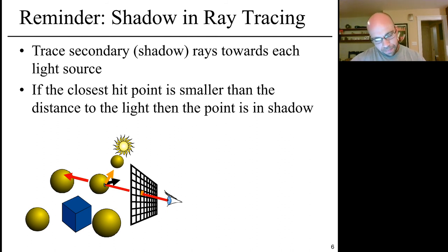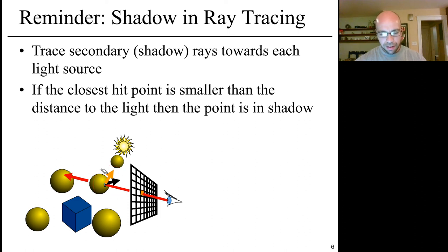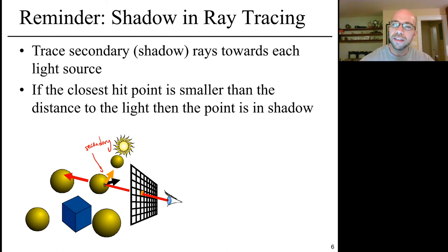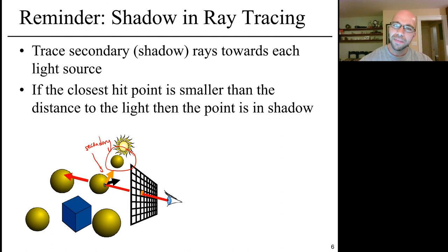In the ray tracing algorithm, rather than looping over objects in the scene, we loop over pixels on the computer screen. We send a ray out and figure out the first object that the ray runs into. If we wanted to handle shadows in our ray tracer, we generated a secondary ray — this orange one — which points from the point of intersection toward the light source. If there's another object in between that blocks the light source from the object being rendered, then the object is in shadow; otherwise it's not.